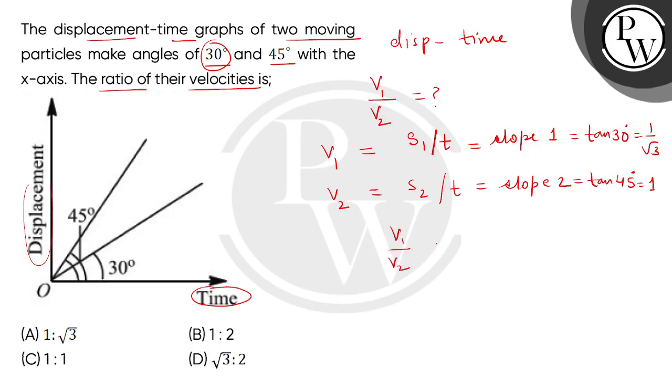V1 divided by V2, the answer will be 1 divided by square root 3 divided by 1, it means 1 is to square root of 3. The correct answer is option A.